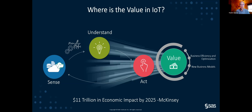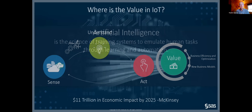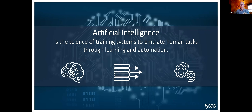Our actions can be fed back into the system. When we apply all of these things, we can realize value: improving the efficiency of our operations, optimizing those efficiencies, and creating new business models. We see a lot of this with digital transformation. Customers are asking how to leverage all the data they're sensing, apply analytics, and monetize those actions for better customer interactions.